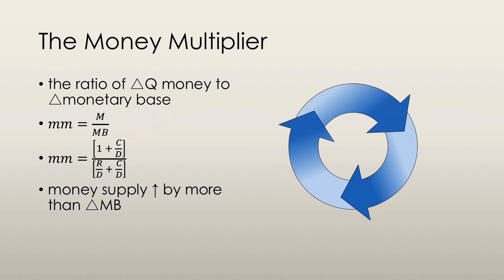The money multiplier is the ratio of the change in the quantity of money to the change in the monetary base. The smaller the bank's desired reserve ratio and the smaller the currency drain ratio, the larger the money multiplier. The money multiplier tells us by how much an increase in the monetary base created by the central bank will actually increase the total quantity of money. It can be calculated as the amount of money divided by the monetary base, or by taking one plus the currency drain ratio divided by the sum of the reserve ratio plus the currency drain ratio. In essence, the money supply will increase by more than the change in the monetary base — it's kind of like the GDP multiplier, which we'll get to in a later lecture.